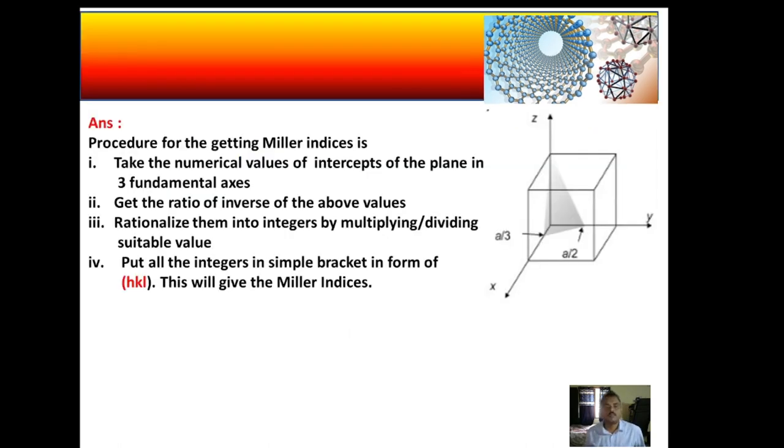For getting the answer, we have to first know the procedure for finding the Miller indices. The procedure has four steps. The first step is: take the numerical values of the intercepts of the plane in the three fundamental axes. Now you can see in this case the three fundamental axes are x, y, and z, so we have to take the intercepts of these three.